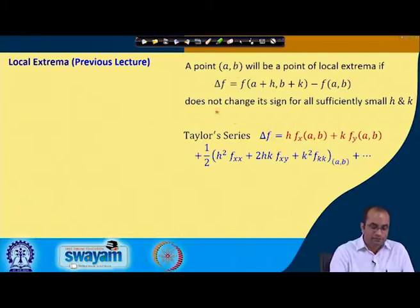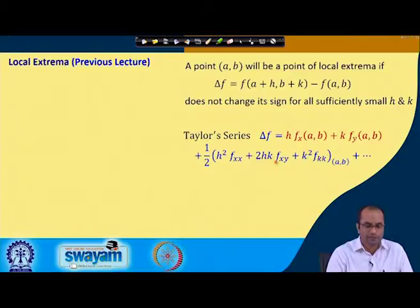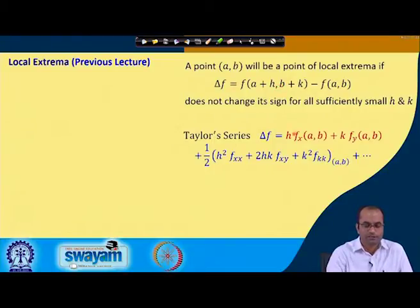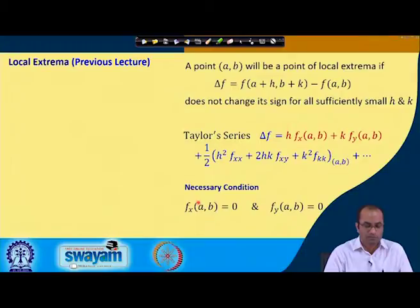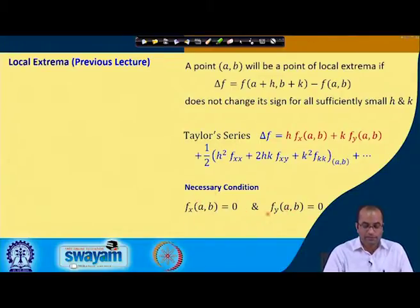To determine the sign of delta f, we use the Taylor series expansion of f(a+h, b+k) around the point (a, b). From this expansion, we obtained the necessary conditions: for the point (a, b) to be a local maxima or minima, f_x at (a, b) must equal 0 and f_y must equal 0.